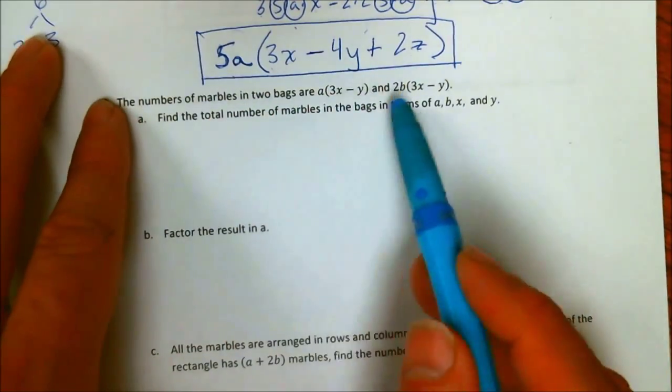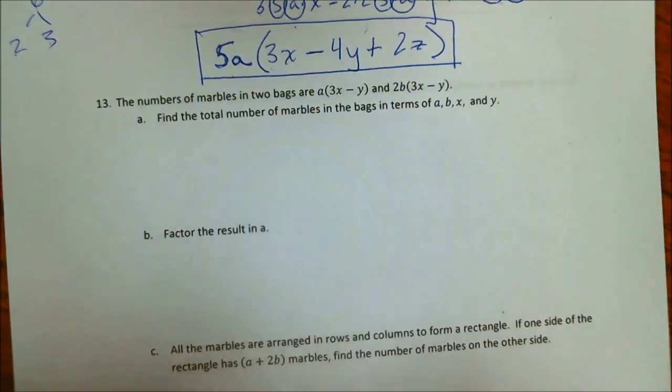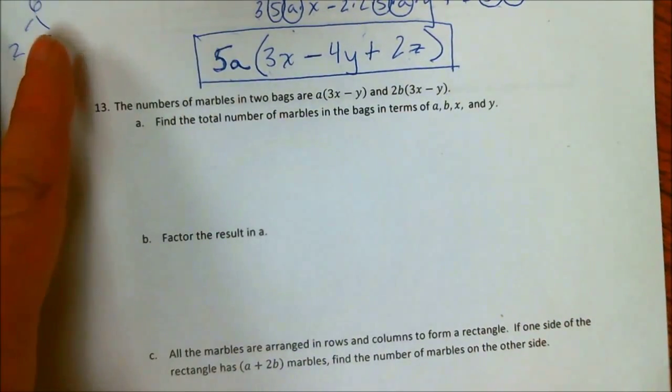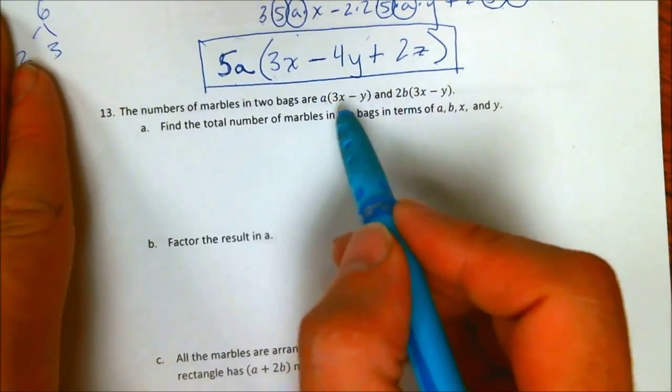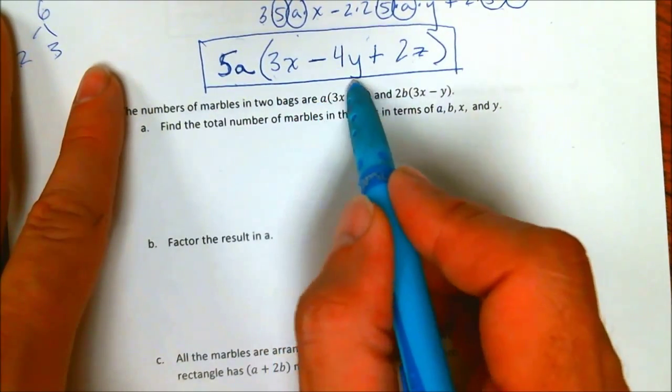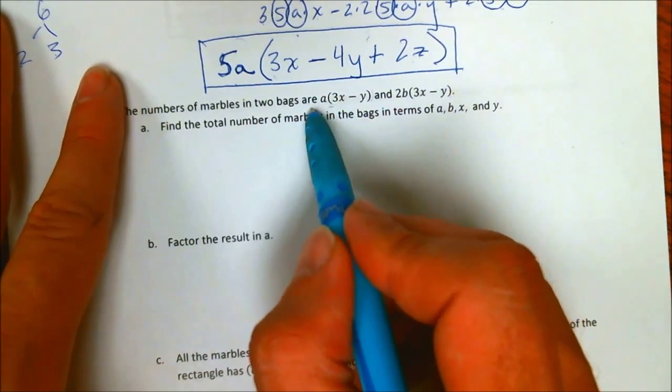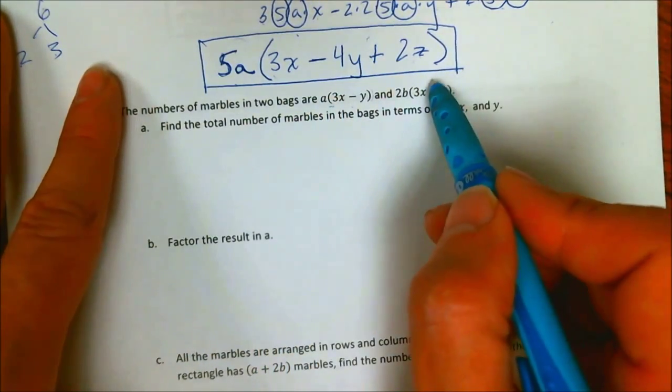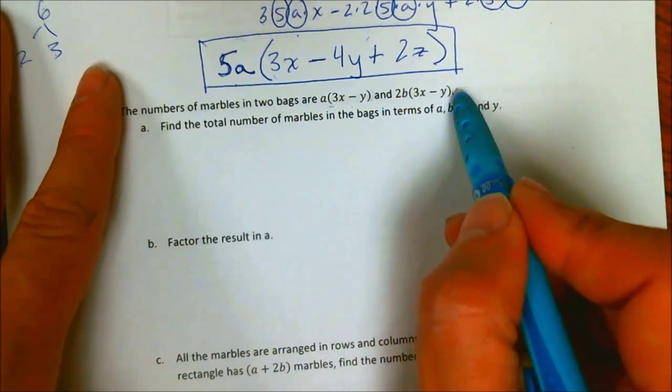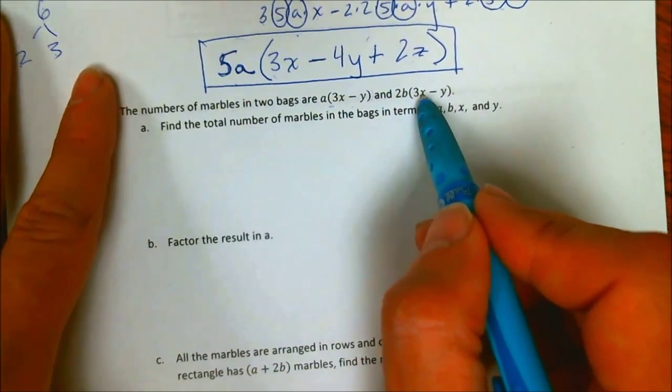You're taking those things and creating abstract models with them. You're creating abstract mathematical formulas with these things. So you need to be able to work within this abstract idea that one bag of marbles has this many marbles in it, expressed as a function of A, X, and Y. And another bag of marbles has this many marbles, expressed as a function of B, X, and Y.